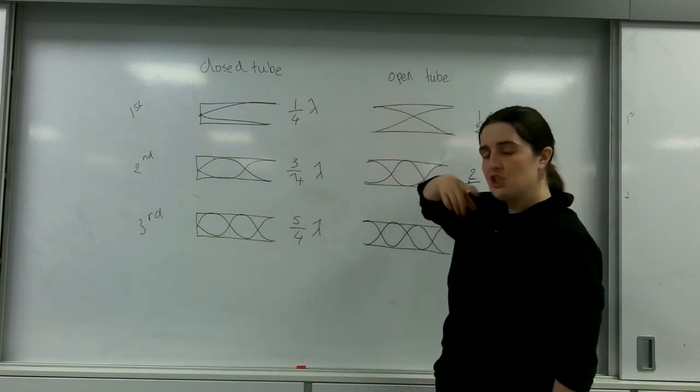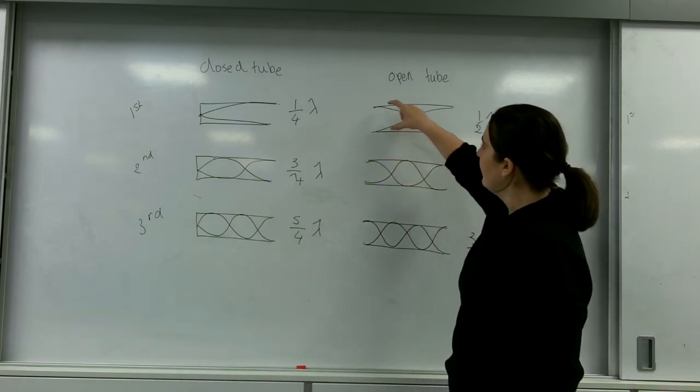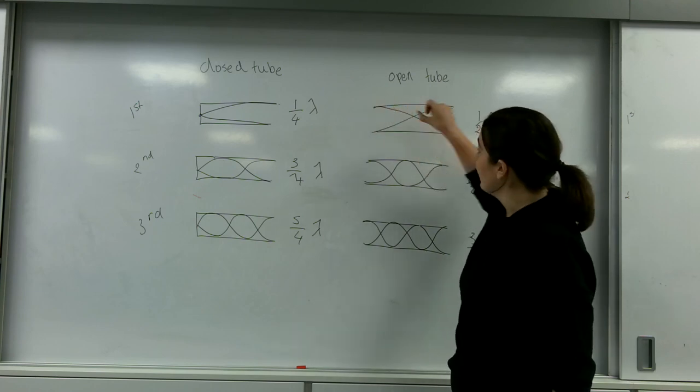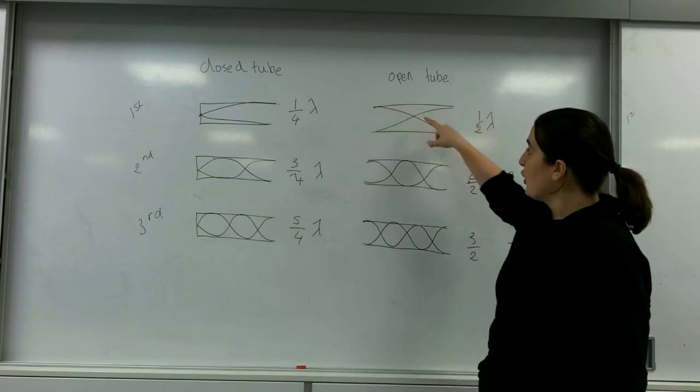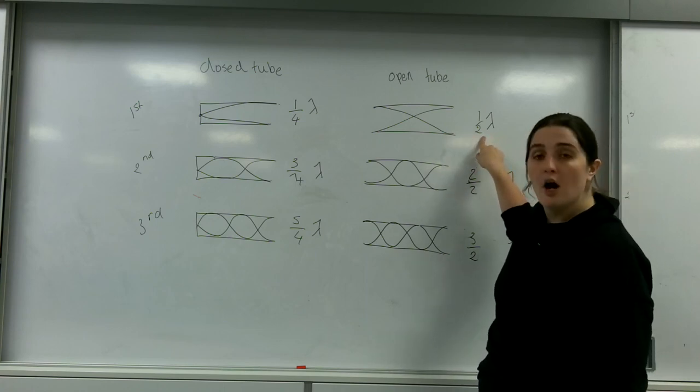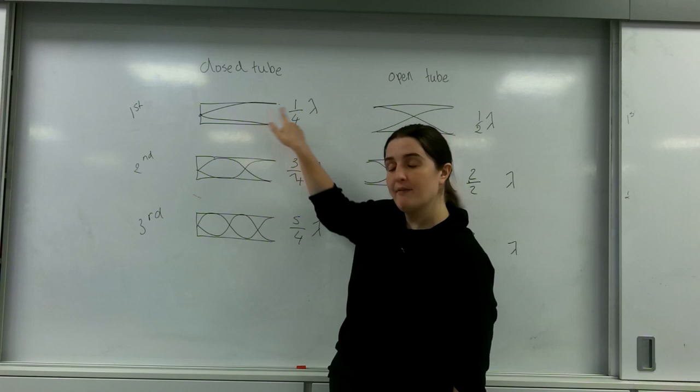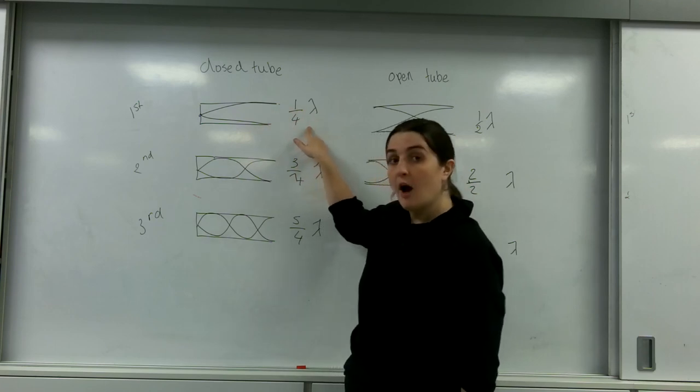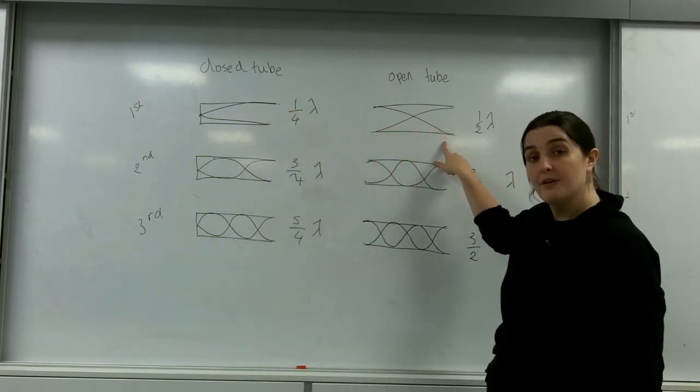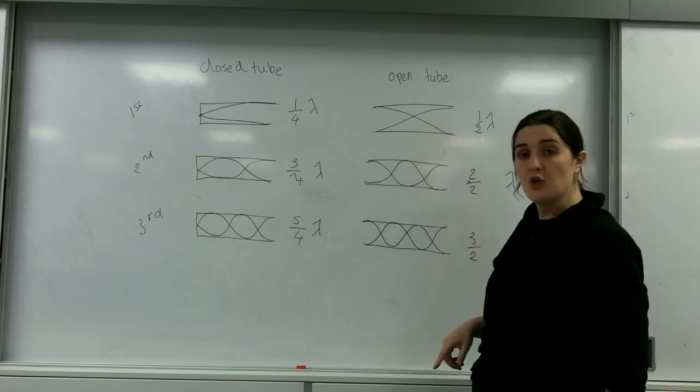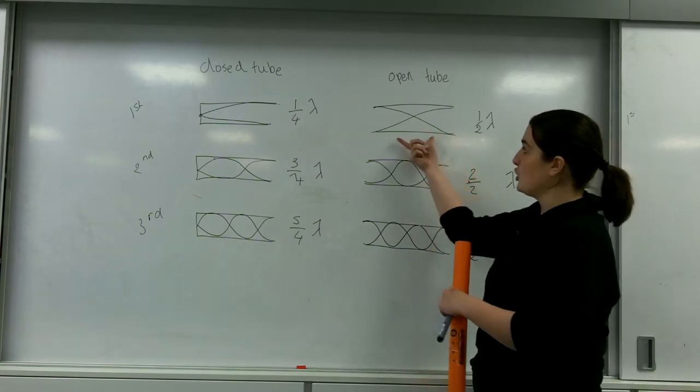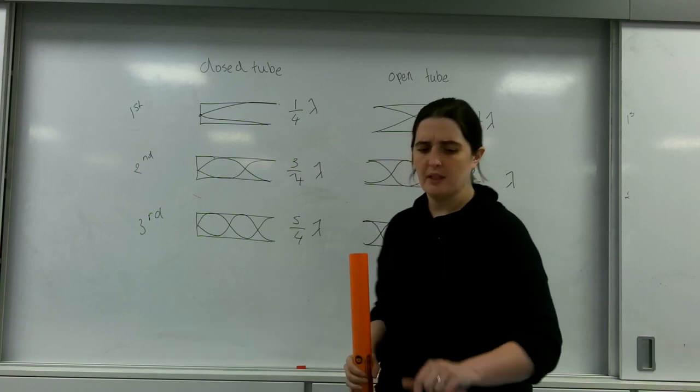The rule stands that there must be an anti-node at the entrance and the exit. This changes things up, so I end up trying to force an anti-node here and here. This makes an open tube have half a wavelength. So in the same space that a closed tube would have a quarter of a wavelength, I'm going to have a much smaller wave because this tube represents half of it and this tube represents a quarter of it.